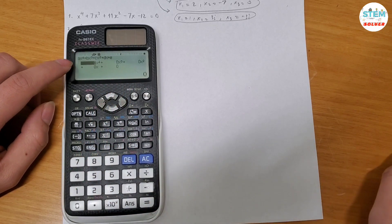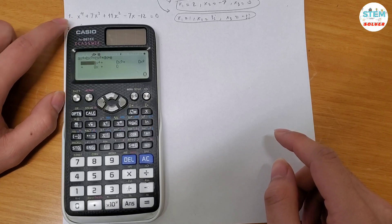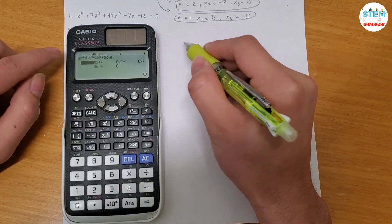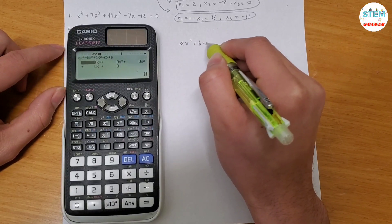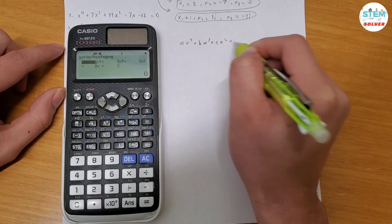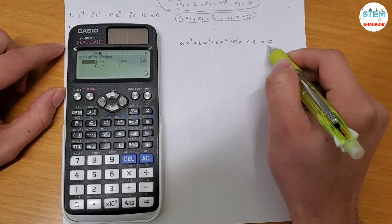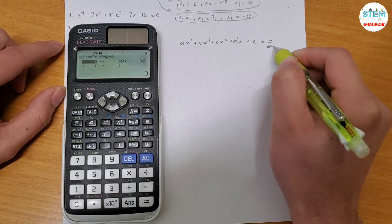In order to solve this equation using calculator, you have to get the equation in this form: Ax to the fourth plus bx cubed plus cx squared plus dx plus e equals 0. So it has to equal to 0.